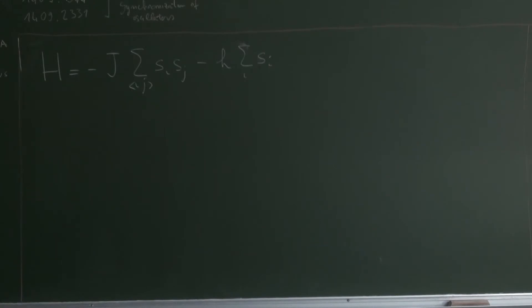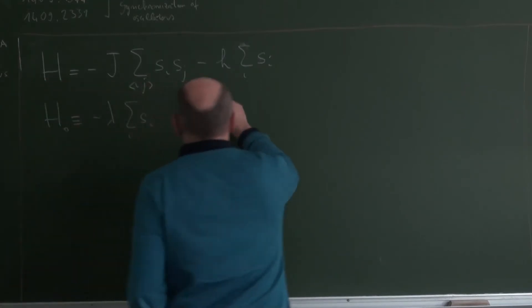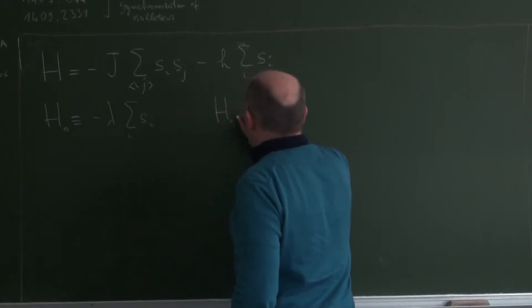So according to the Bogoliubov idea, Bogoliubov inequality, we are going to split this Hamiltonian into two terms. The first one is H0, is given by the following expression. This is the sum over independent spins, so it's something that we can solve quite easily.